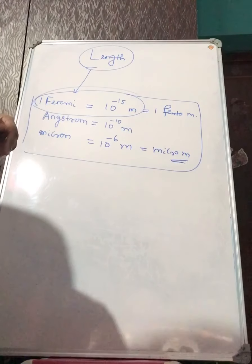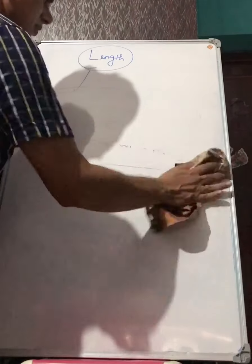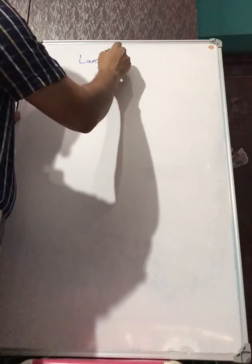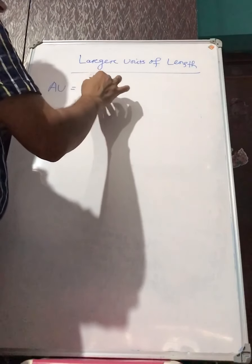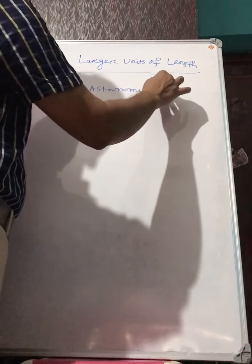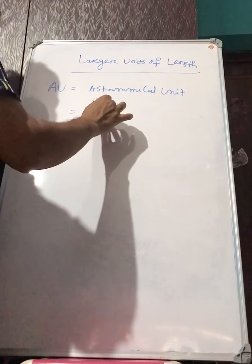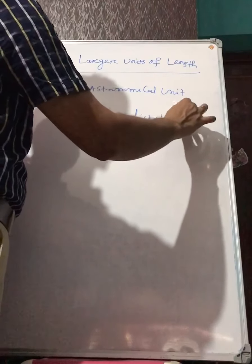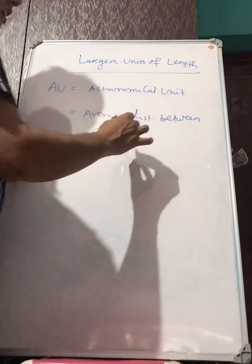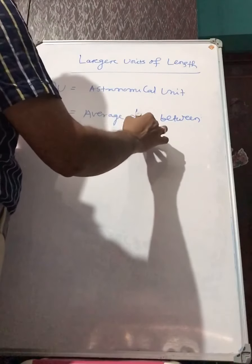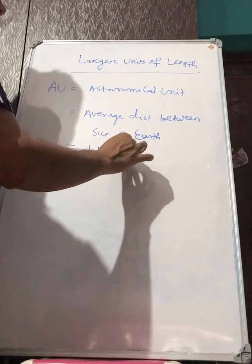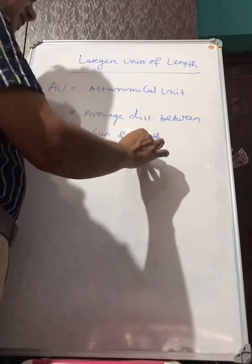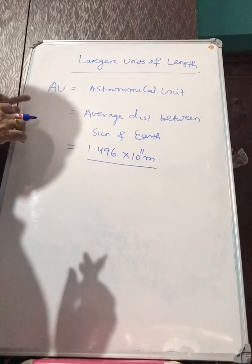There are also larger units of length. We should be very clear about three terms. The first is astronomical unit (AU) — this is actually the average distance between the sun and the earth, and its value is 1.496 × 10¹¹ meters.